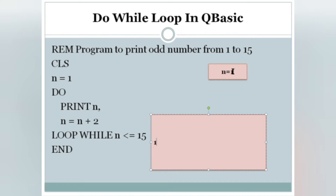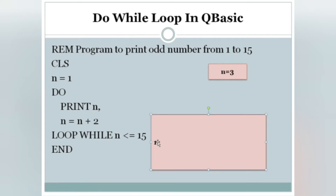N is already 1, so N plus 2 means 1 plus 2 is 3. Then LOOP WHILE N <= 15 — this is the end of the do-while loop, and before it ends it checks the condition. N is now 3; 3 <= 15, condition is true. When the condition is true, it goes back to DO and executes the body again — PRINT N, and N value is 3, so 3 is printed.